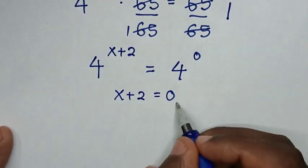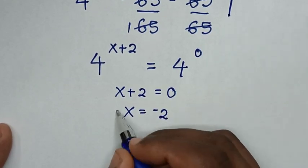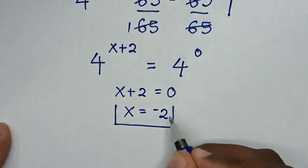Then we take this 2 to the right side, so it will be x is equal to negative 2. So this is the final answer for the value of x.